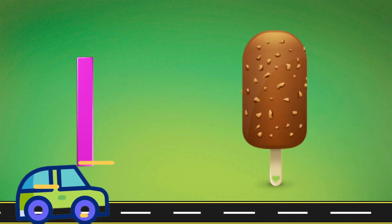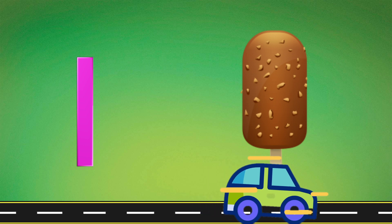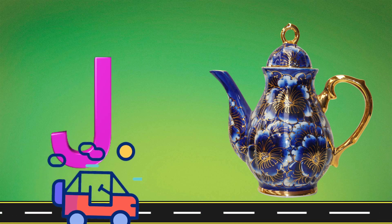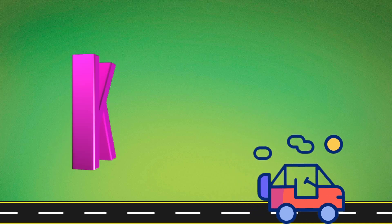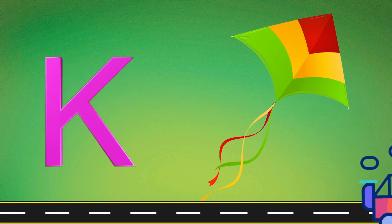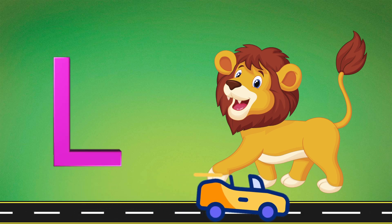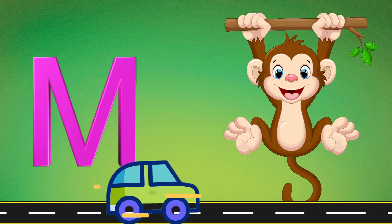I. I is for Ice Cream. J. J is for Jerk. K. K is for Kite. L. L is for Lion. M. M is for Monkey.